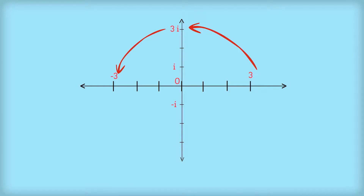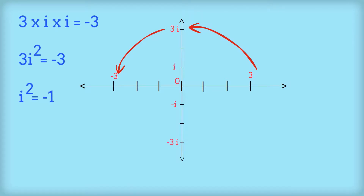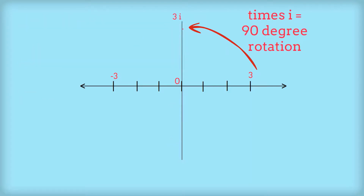So 3 times I times I gives negative 3. Therefore 3I² equals negative 3, so I² equals negative 1, meaning I equals the square root of negative 1. So if multiplication by I represents a rotation of 90 degrees, what happens when we multiply by 1 plus I, or negative 2 plus 3I, or 5 plus 10I?